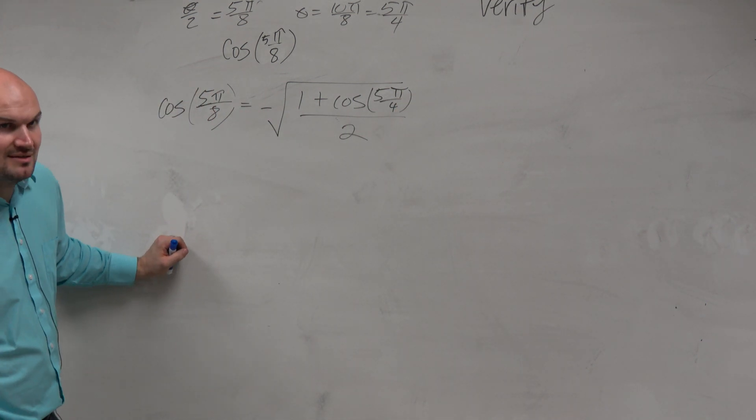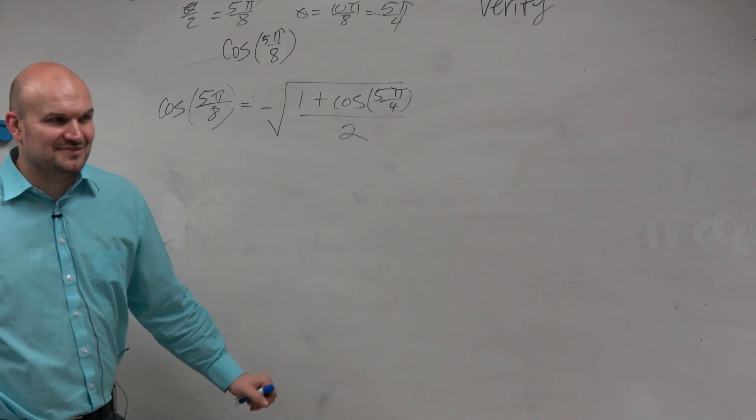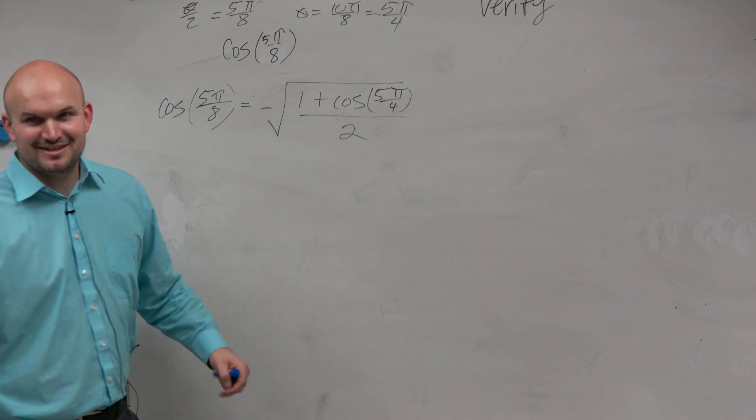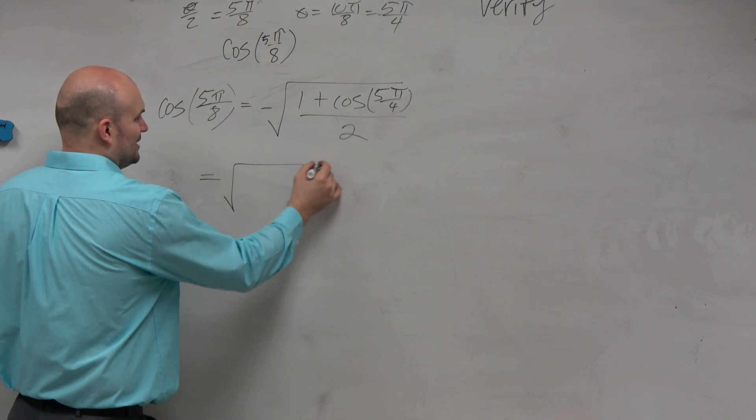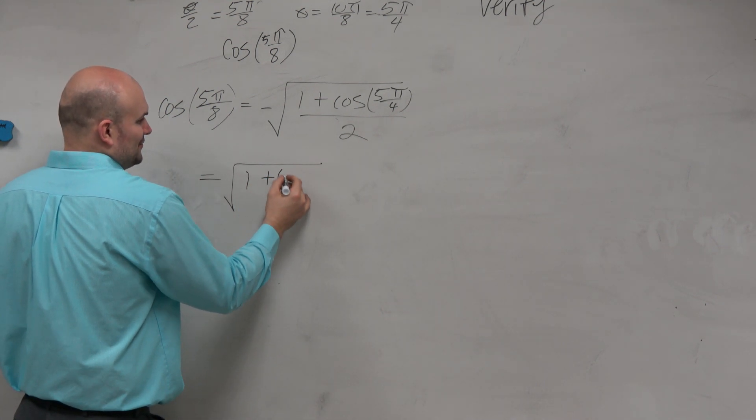Do we know what the cosine of 5π over 4 is? Negative square root of 2 over 2. OK, good. So hopefully we'll brush up there on that unit circle for you guys.